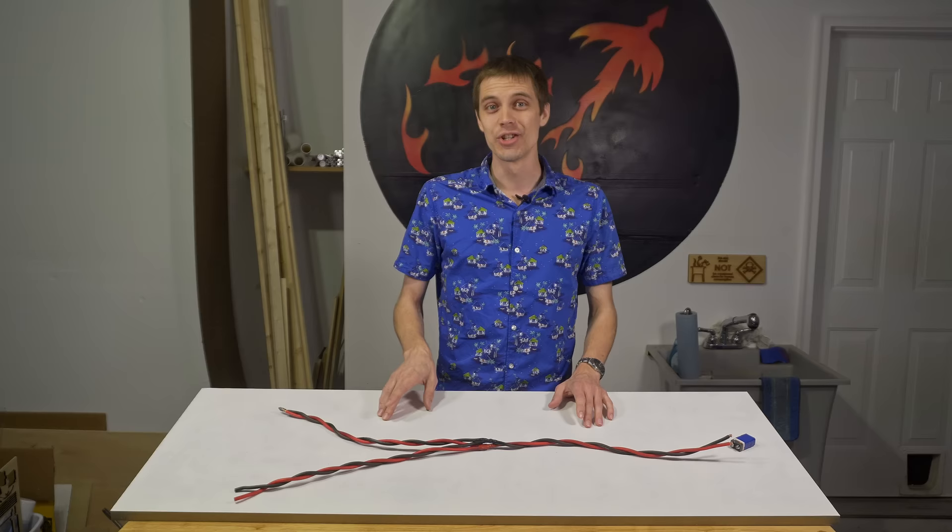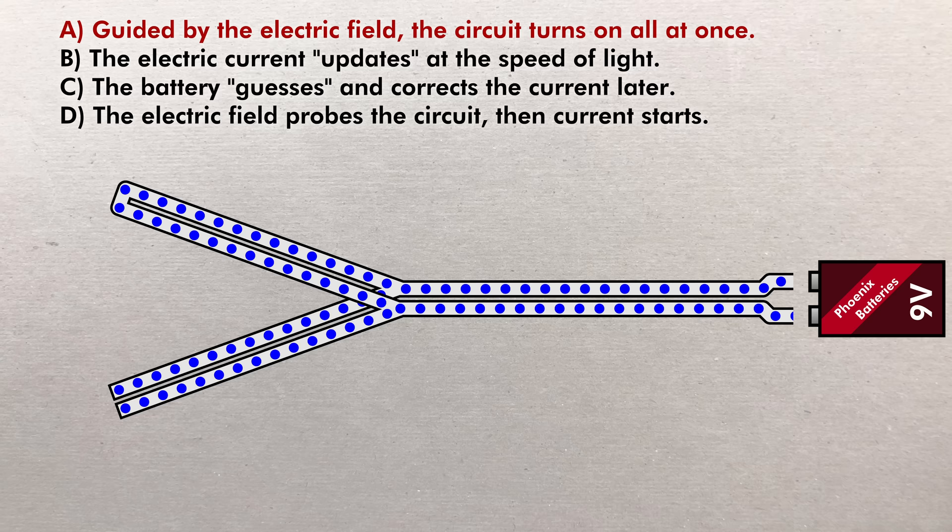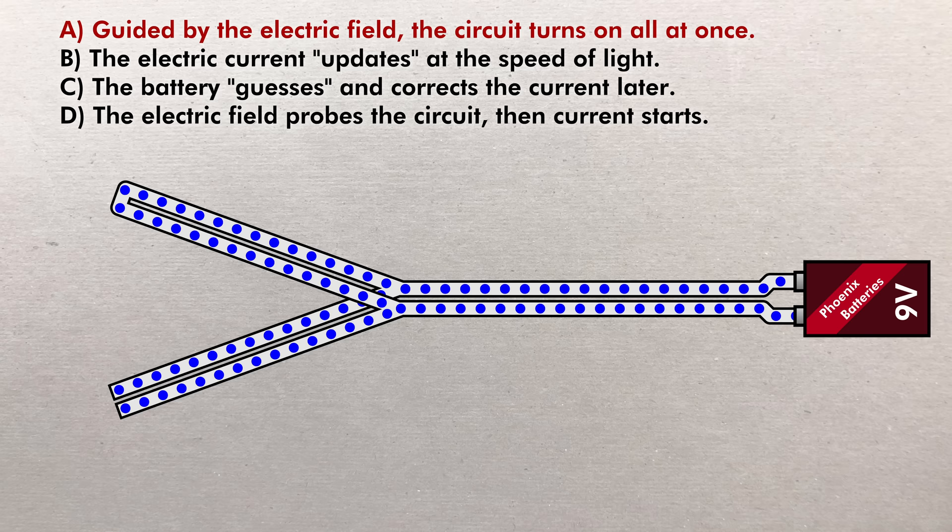So what do you think is going to happen? Based on comments that I've gotten on other videos, here are four possible answers. Option A, the electric field has already solved the circuit. As soon as the battery is connected, the correct amount of current will flow through the connected branch, and no current will flow down the disconnected branch.